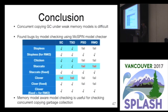In conclusion, concurrent copying garbage collection under weak memory models is difficult. We found bugs by model checking using MaxSpin, and we fixed these bugs and successfully ported some algorithms to weaker memory models. From this experience, we found memory-model-aware model checking useful for checking concurrent copying garbage collection algorithms. Thank you very much.